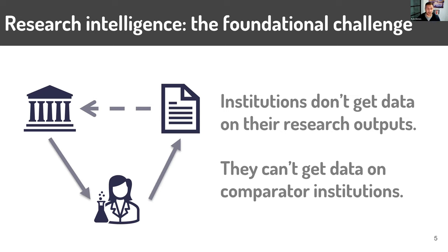The foundational challenge of research intelligence is that in academia, publications happen outside of your institution, which is really important for the quality of peer review and trust in science. The challenge is that publishers don't actually have to give back any information about the research they're publishing. So academic institutions are one of the only organizations in the world that don't even necessarily have a simple inventory of the research that they're doing, which limits what research intelligence you can do.